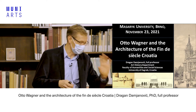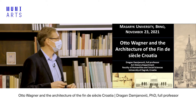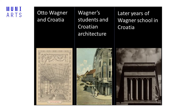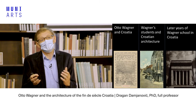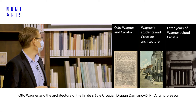If I'm too long, just warn me and I will try to shorten the final part of my presentation. The presentation will be divided into three parts. First, I will show you some direct connections between Otto Wagner and Croatia. Then I will show how he influenced Croatian architecture through his students. Finally, I will cover the late years of the Wagner school in Croatia, showing the lasting impacts his students had on Croatian architecture into the 1910s and 1920s.